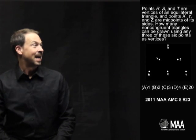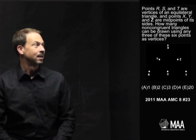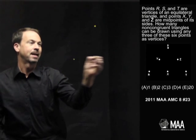It goes as follows: Points R, S, and T are vertices of an equilateral triangle, and points X, Y, and Z are on its sides. Let me just draw that on my glass screen while I'm at it.